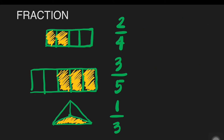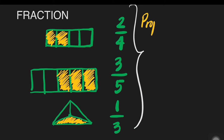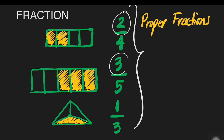These fractions are called proper fractions. Why are two-fourths, three-fifths, and one-third examples of proper fractions? It is because they are always less than one. If you notice, they do not reach one whole when we shaded the parts — it means they are less than one whole. And if you notice, the numerators are all lesser compared to their denominators.